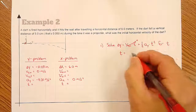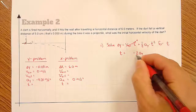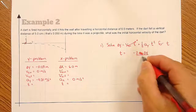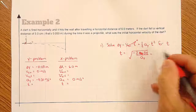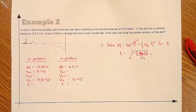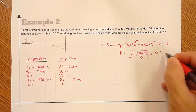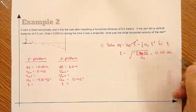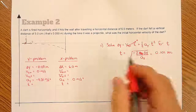Solving for time: t equals the square root of negative two times delta y, divided by the acceleration in the y direction. Plugging in all the numbers, we get a time of about 0.101 seconds. So it doesn't take very long to travel from the beginning to the end. Now we know the time.